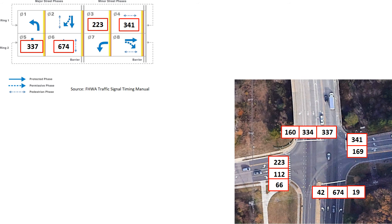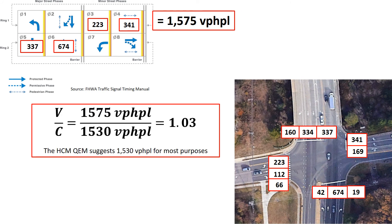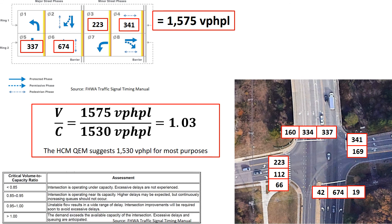Now we sum those critical lane volumes and get 1,575 vehicles per hour per lane. For each phase we identified the critical movement volume, and the sum is 1,575. A common assumption from the Highway Capacity Manual is a capacity of 1,530, so dividing the volume by the capacity gives a ratio slightly over one — meaning this intersection is operating over capacity and demand exceeds available capacity. A saturation flow study could help better understand whether the actual capacity is higher than 1,530, but using this quick estimation method provides in a short amount of time an estimate of the volume-to-capacity ratio for this intersection.